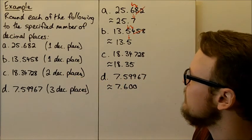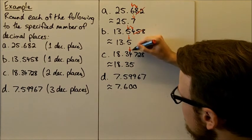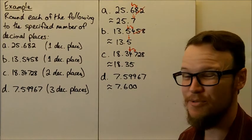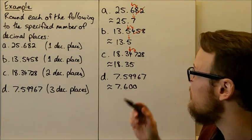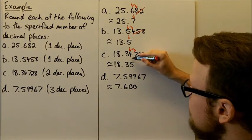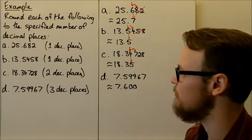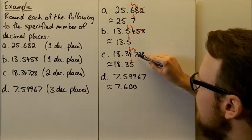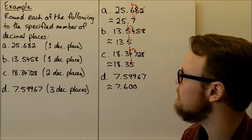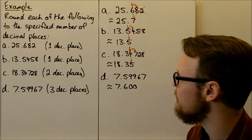We're asked to round the next one to two decimal places. We look at the second decimal place and the number to the right of it — it's a 7, which is bigger than 5, so we need to round this number up. So 4 is rounded up to 5, and we don't worry about the other numbers that come after it. This number rounded to two decimal places is 18.35.